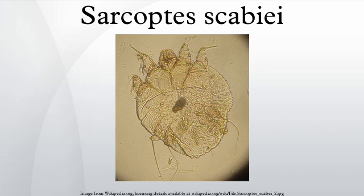Sarcoptes scabiei, or the itch mite, is a parasitic arthropod that burrows into skin and causes scabies. The mite is cosmopolitan, meaning it can be found in all parts of the world. Humans are not the only mammals that can become infected. Other mammals such as wild and domesticated dogs and cats, as well as ungulates, wild boars, bovids, wombats, koalas, and great apes are affected.